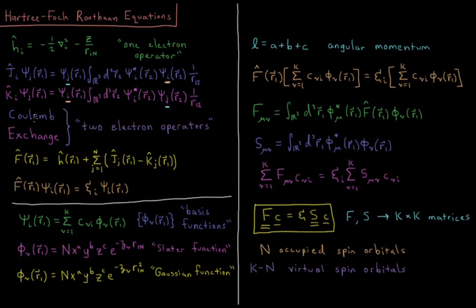We then have our two-electron operators: the Coulomb and exchange operators. The Coulomb operator J_i acting on psi_j for electron one gives us psi_j of electron one — so electron one is still in atomic orbital j — and it feels the average repulsion due to an electron in atomic orbital i. We integrate over all possible locations of electron two of psi*_i times psi_i, that's the charge density of an electron in atomic orbital i, divided by 1/r_12, the distance from that charge density at location r2 to our electron at location r1.